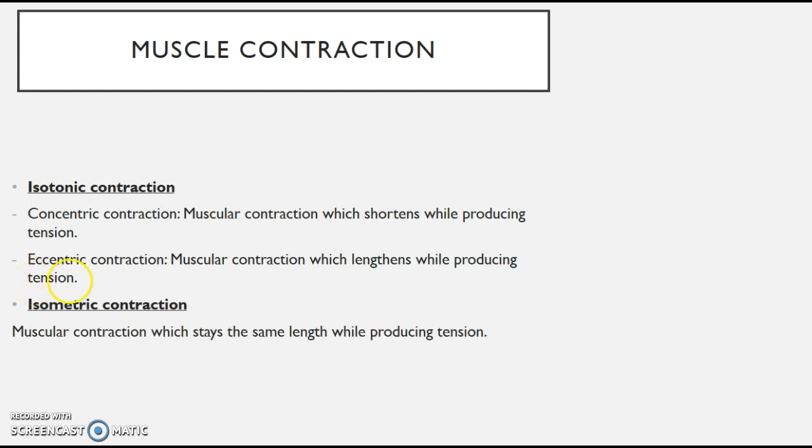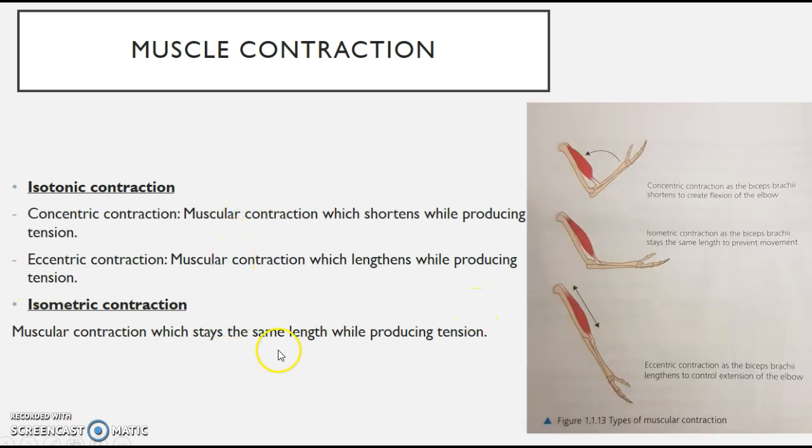You've finally got isometric contraction. This is when muscles contract but they stay the same length. So these three terms will be looked at at the very end of the lesson. If you look over here, a nice little example. If you look at this, concentric contraction as the bicep brachii shortens to create flexion of the elbow. You can see this. As it goes up that way, that muscle shortens and the tension causes it to come out a little bit.